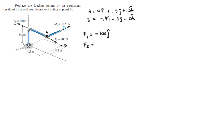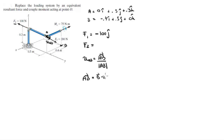For F2, we need to find the Cartesian vector form. To do that, we find the unit vector aiming in its direction. Unit vector â is given by vector A divided by its magnitude. Vector A is given by B minus A, which equals -0.4i + 0j - 0.3k.